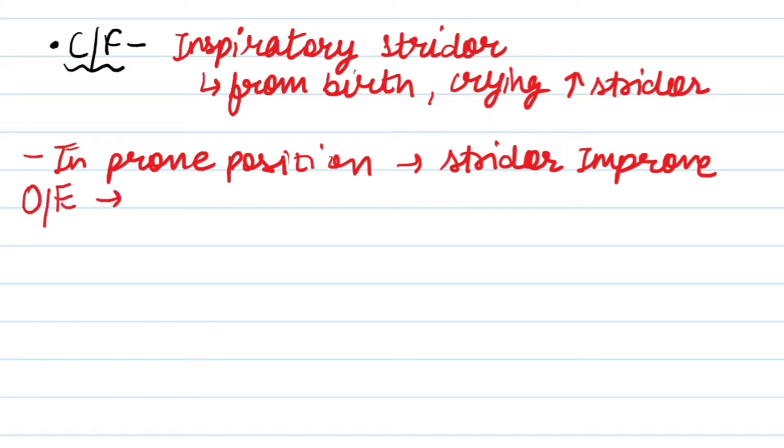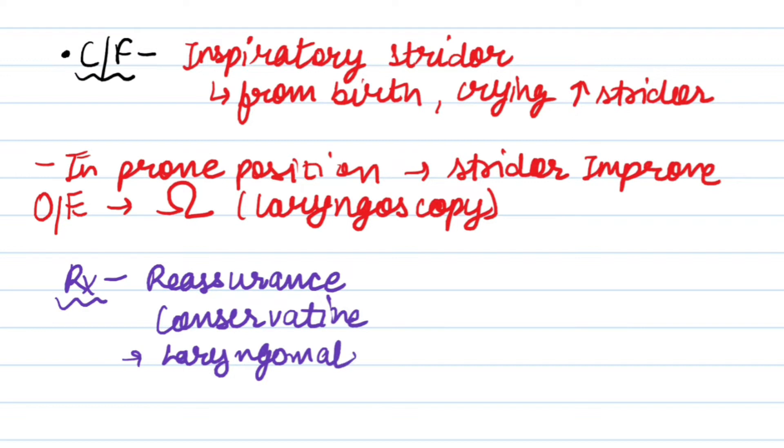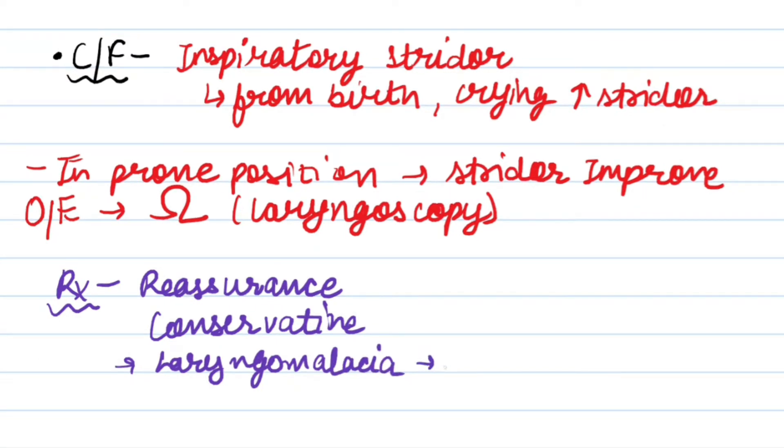On observational examination by laryngoscope, you will see omega-shaped epiglottis. Treatment is reassurance and conservative management. Laryngomalacia disappears by two years of age. If it doesn't disappear, then we will do surgery which is supraglottoplasty.